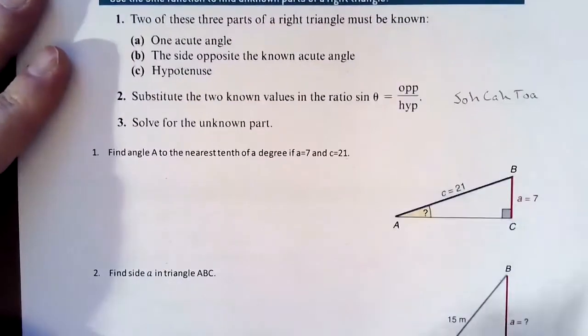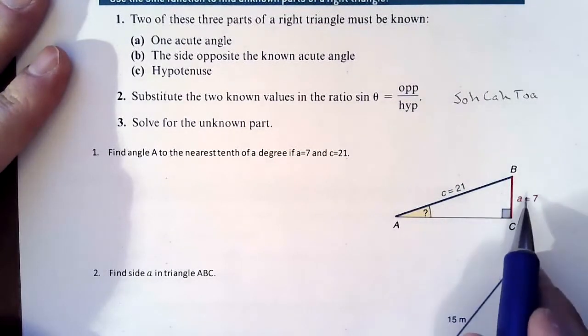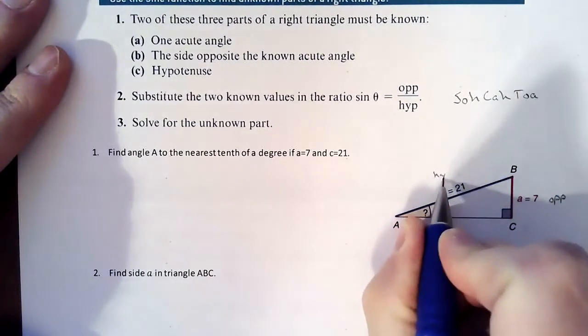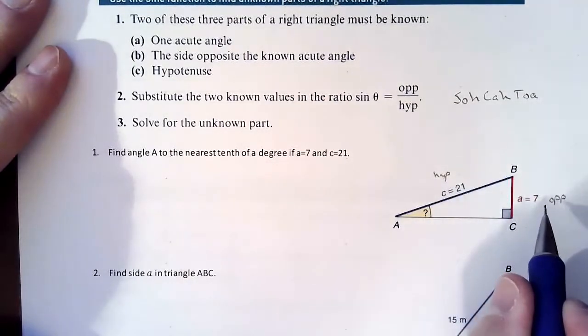If you look at your picture here, we have this angle which we don't know, and then the information that we do know is this side over here, which is the opposite, and this side here, which is the hypotenuse. So based on that, we have to use sine.